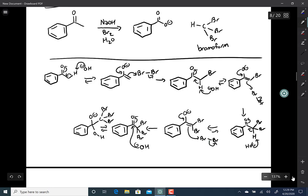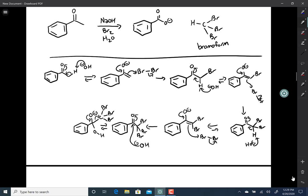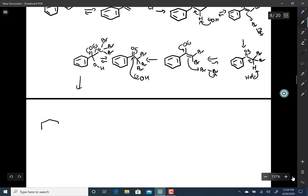So what the base does is attacks the carbonyl. Now, that O- could swing down and kick the OH off, that just sends the reaction backwards. Or, now we have a carbon attached to three bromines, it can actually swing down and kick that off.